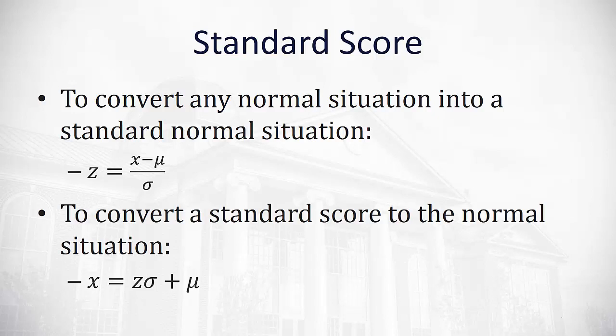If we want to convert back the other direction, we can take our standard score to get our normal situation, which is x equals the number of standard deviations times the standard deviation plus the mean. Remember, if we're to the left of the mean, z will be negative, and if we're to the right of the mean, z will be positive.